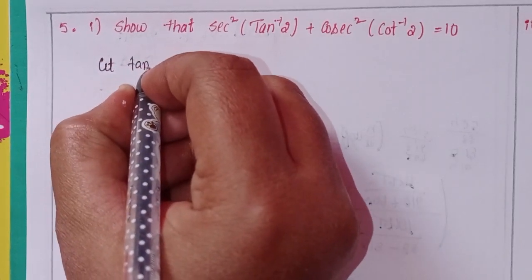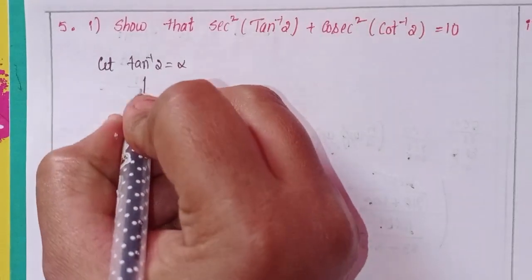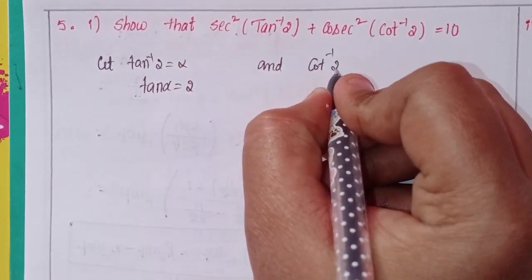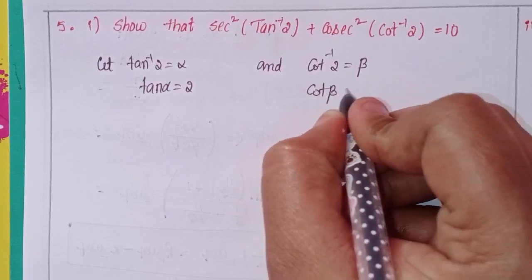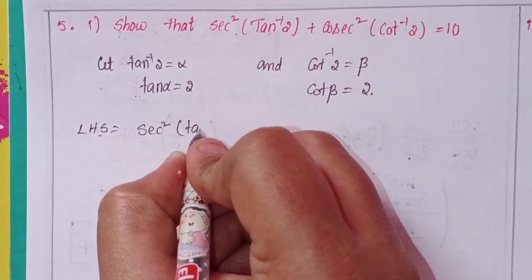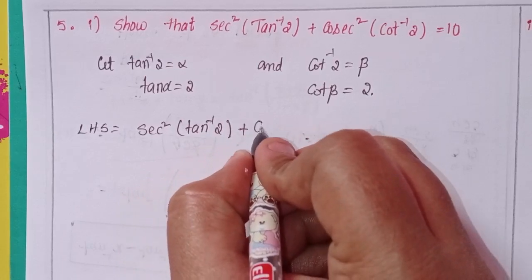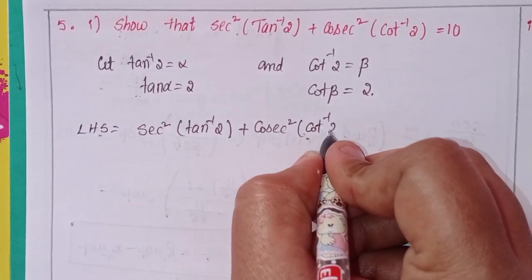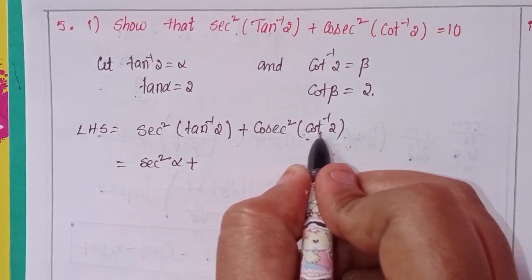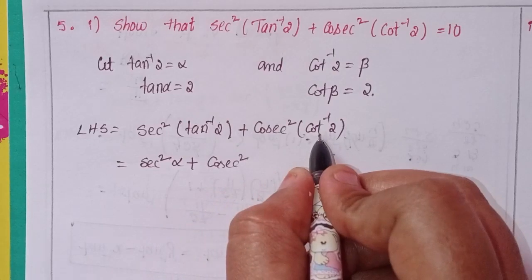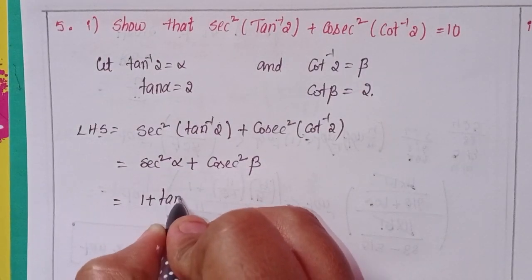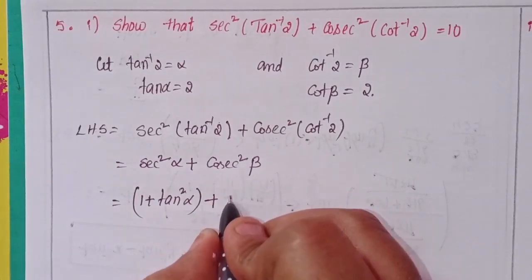Let tan⁻¹2 = α, that means tan α = 2. Also, cot⁻¹2 = β, so cot β = 2. For the LHS: sec²(tan⁻¹2) + csc²(cot⁻¹2) means sec²α + csc²β. We can write this using the identity: 1 + tan²α, plus here also 1 + cot²β.